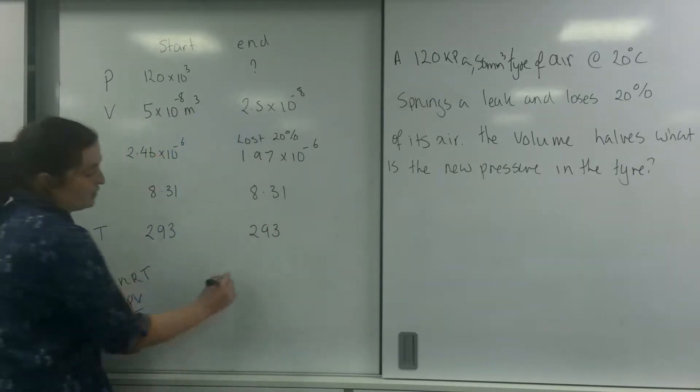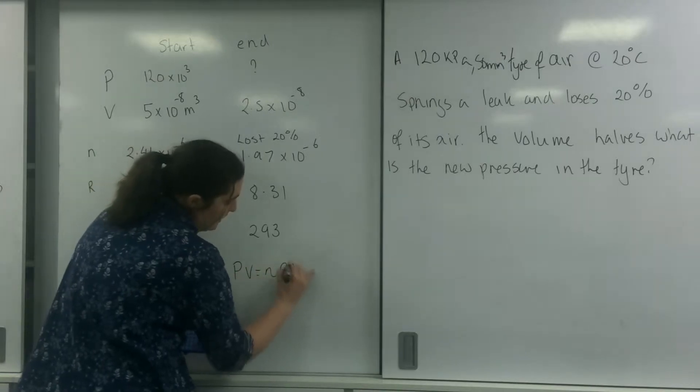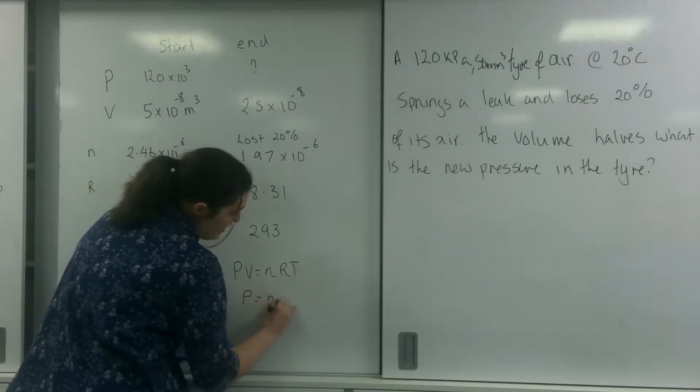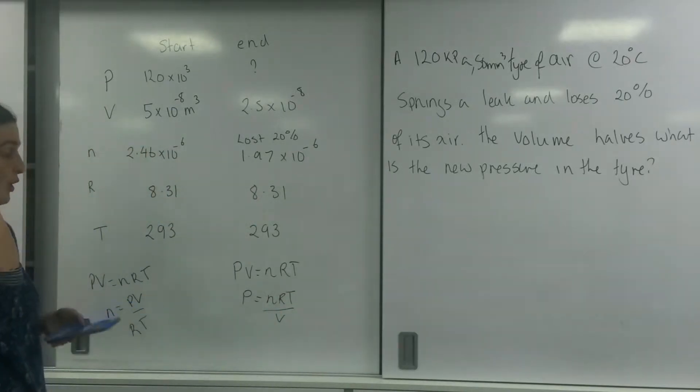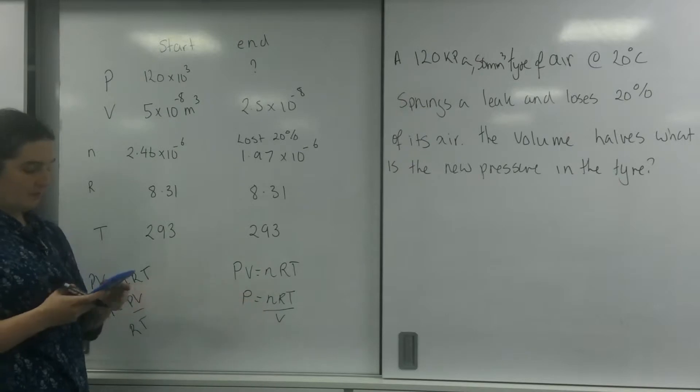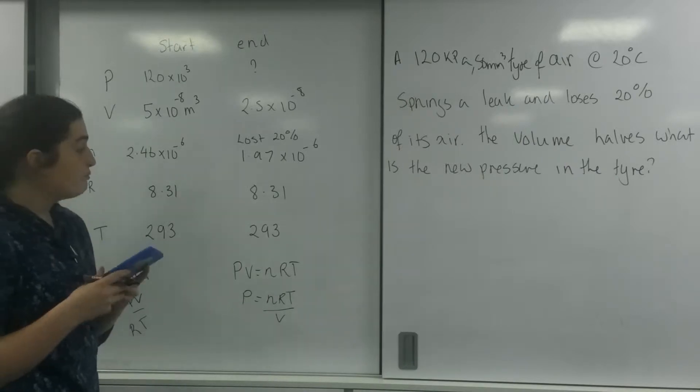I now have enough information to use PV equals nRT, or pressure is nRT over volume, to work out my new pressure. So I know my n, I know R because it's 8.31, I know 293. I'm going to divide that by my volume, which is 2.5 times 10 to the minus 8. And my new pressure...